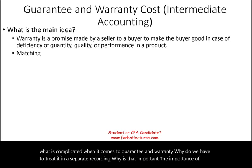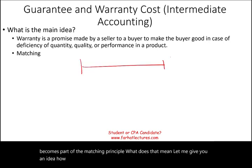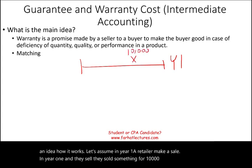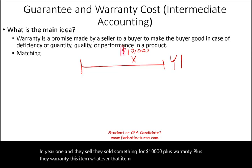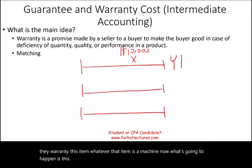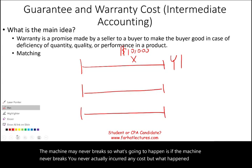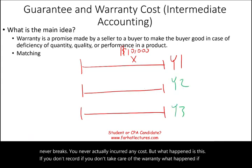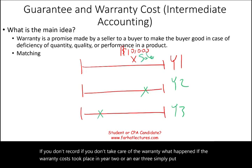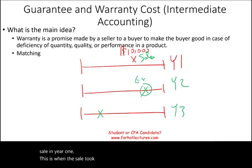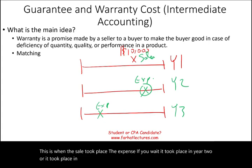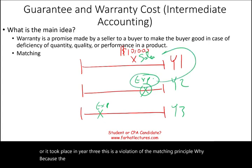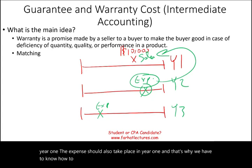The importance is it becomes part of the matching principle. Let me give you an idea how it works. Let's assume in year one, a retailer makes a sale and sells something for $10,000 plus warranty. The machine may never break. If you don't record the warranty, what happens if the warranty cost took place in year two or year three? You make a sale in year one, but the expense took place in year two or year three — this is a violation of the matching principle. Because the expense should follow the revenue, if the revenue took place in year one, the expense should also take place in year one. That's why we have to know how to book and when to book guarantee and warranty cost.